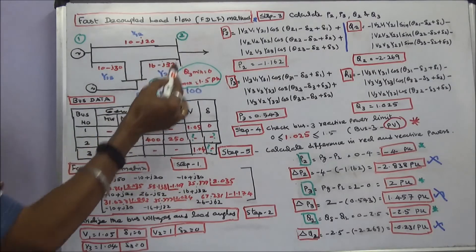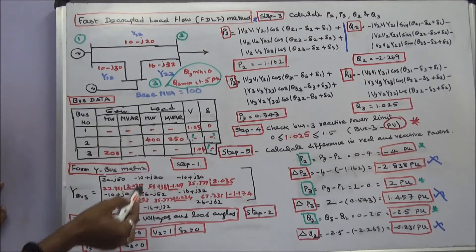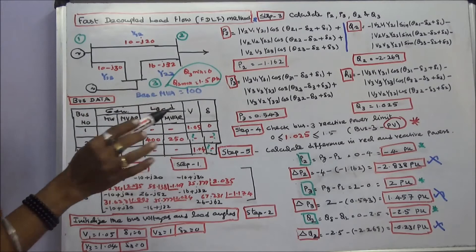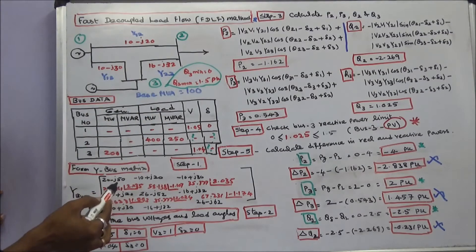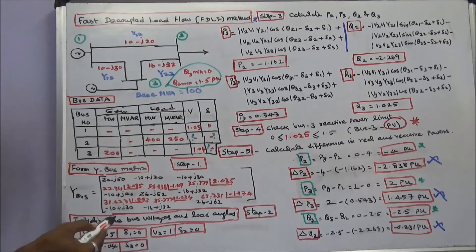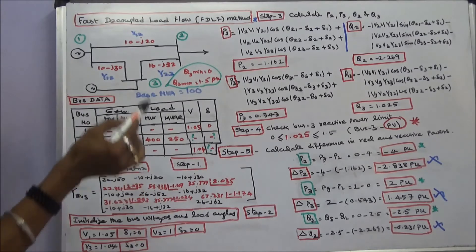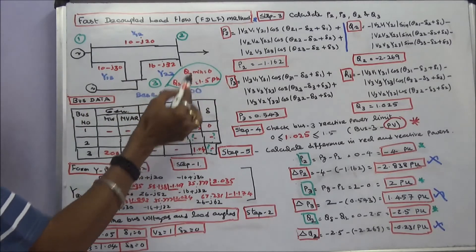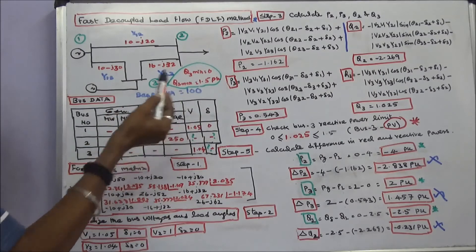Bus 2 is a load bus with real power load of 400 megawatts and reactive power load of 250 megavolt ampere reactive. Bus 3 is a PV generator bus with real power generation of 200 megawatts and V3 equal to 1.04. The reactive power limit for Q3 is: minimum 0, maximum 1.5 per unit. Base MVA is 100.